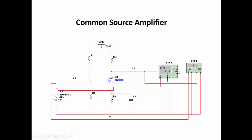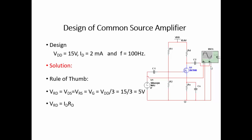The oscilloscope channel A is connected at the input and channel B is used for measuring the output signal. The Bode plotter is connected to observe the frequency response. This is the design based on the given specifications.